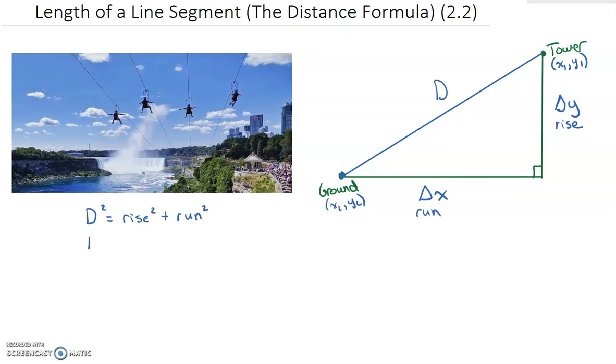Rearranging this just for d, you get this. Take the square root of both sides. So d is the square root of the rise squared plus the run squared.